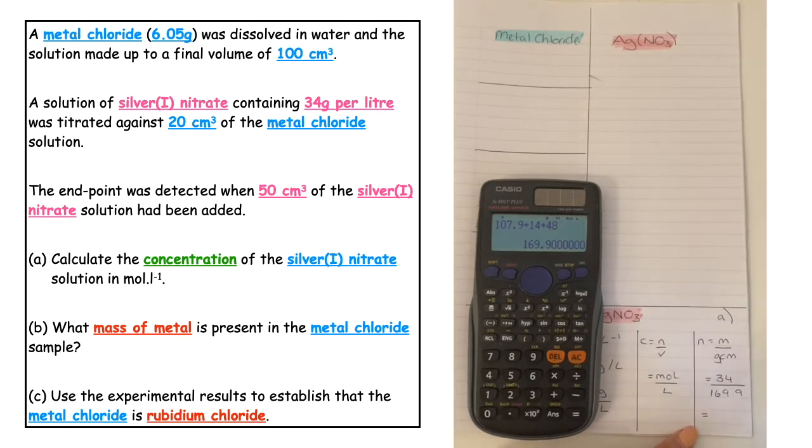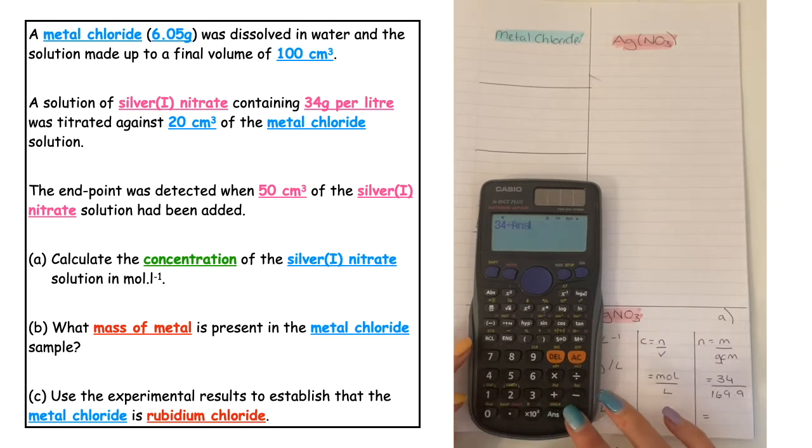When I pop that into the calculator, 34 divided by answer, that comes in at 0.2. That's how many moles are in one litre.